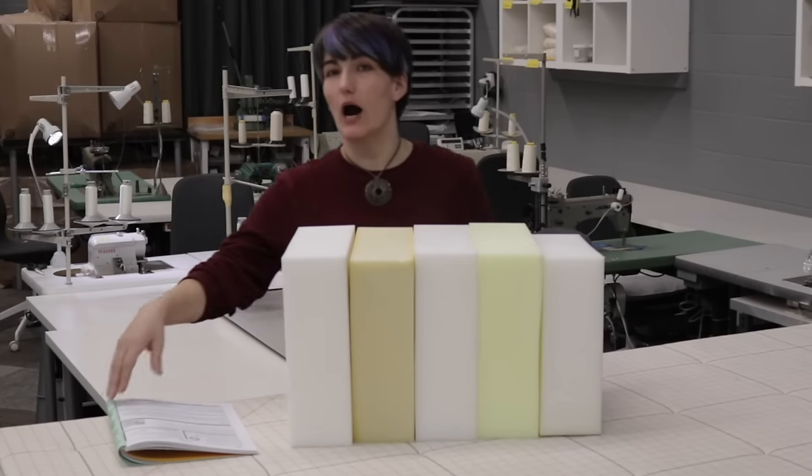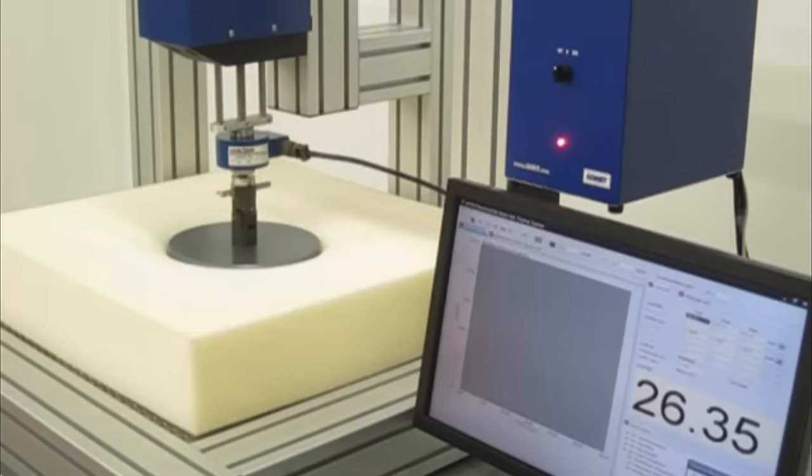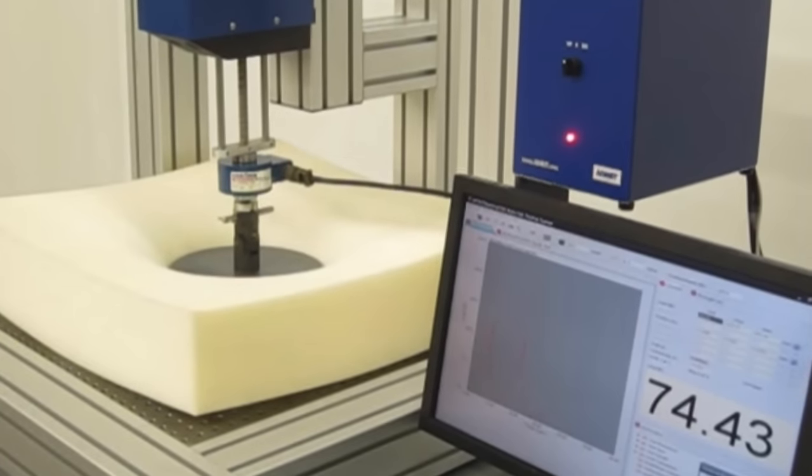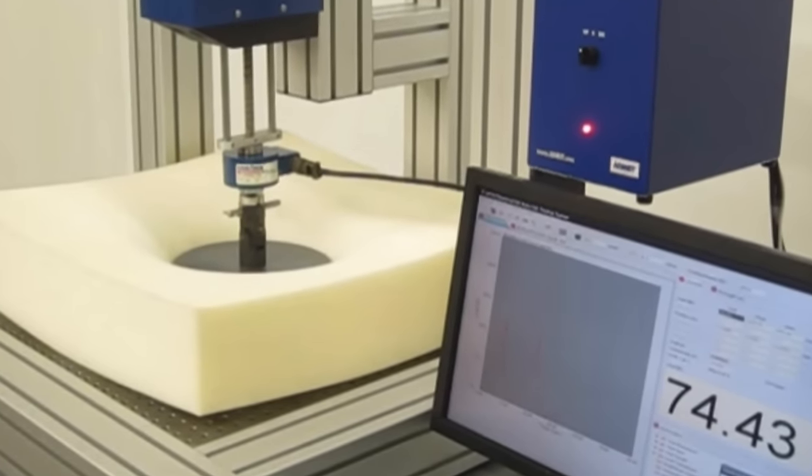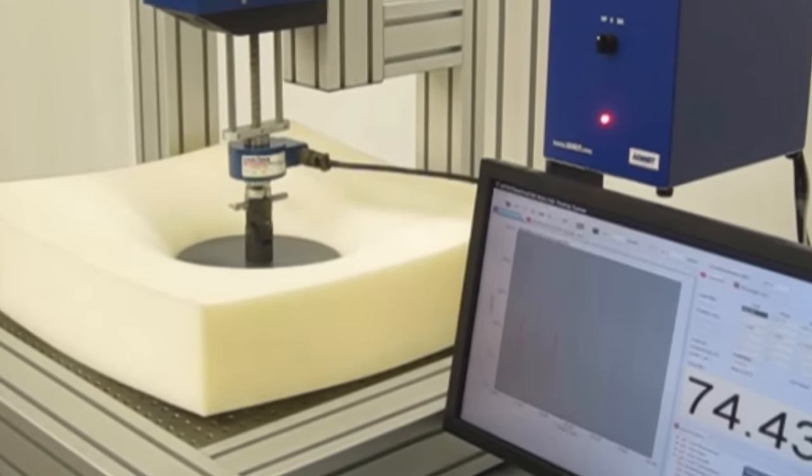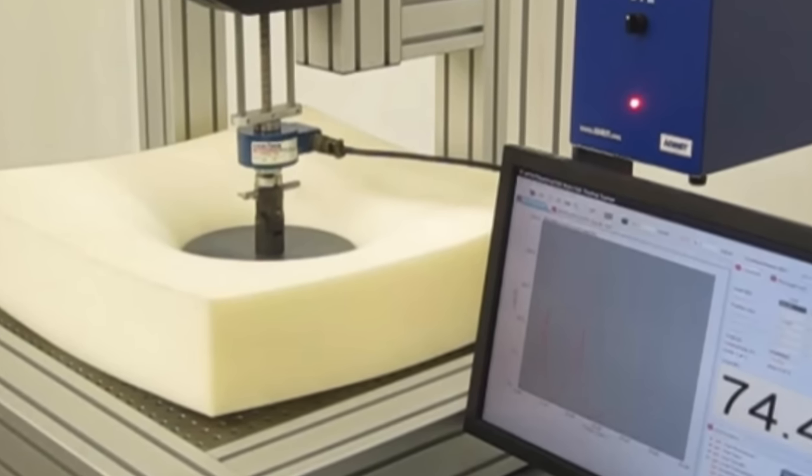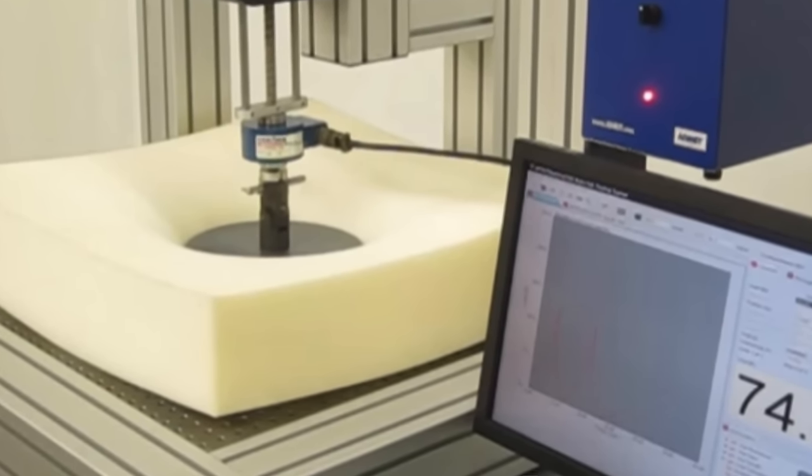It's interesting to know how IFD is measured. The standard test is to depress a 50 square inch indenter foot into a foam sample that measures four by 15 by 15. The amount of force that is required to compress the sample from four to three inches is known as the IFD or the compression.